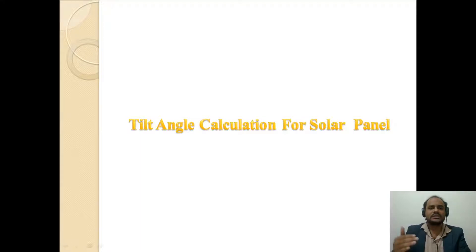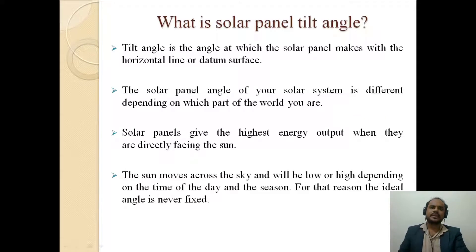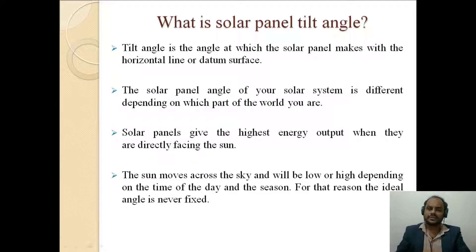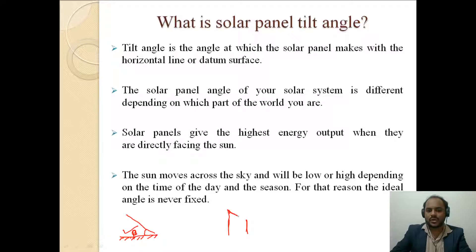The tilt angle calculation is very important. There are various methods to calculate the tilt angle — some people go for a fixed tilt angle and some go for a tracking type of tilt angle, depending on the application. Basically, the tilt angle is the angle at which the solar panel makes with the horizontal line or the datum surface. This angle beta is what we call the tilt angle for a particular solar panel mounted on a structure with one longer and one shorter column.